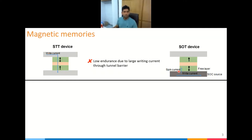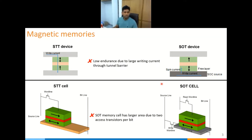A solution to STT memory is SOT — spin orbit torque — memory. In SOT devices, the advantage is we have two separate paths for reading and writing, whereas STT has a single path. Therefore, SOT has high endurance and a lower read current. However, the SOT memory cell has a big disadvantage in density: a STT cell requires one transistor, whereas a SOT cell requires two transistors — one for reading and one for writing — making large SOT memories very costly.